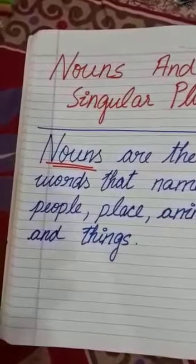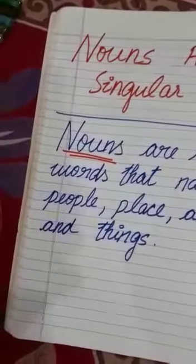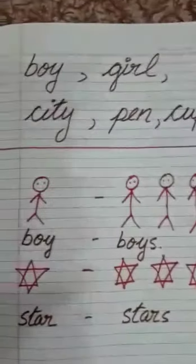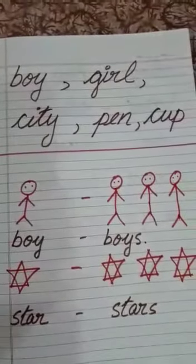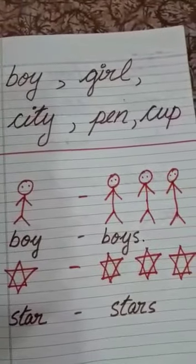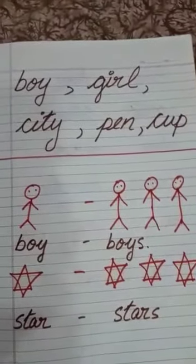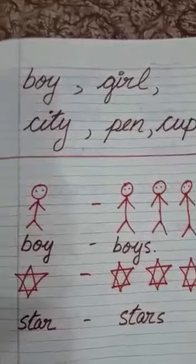So, for example, computer, blackboard, boy, girl, city, pen, cup etc. So you all know what is a noun.